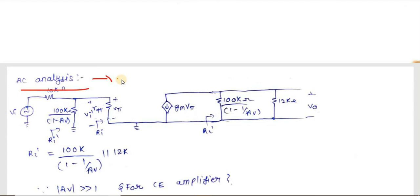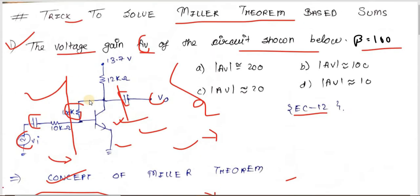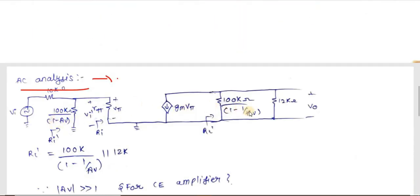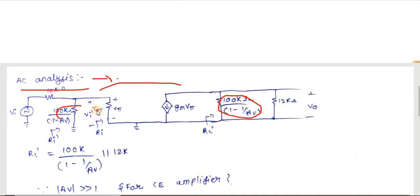For AC analysis, we use the re-model and short-circuit all capacitors. Applying Miller's theorem to the 100 kΩ feedback resistor, it splits into 100k/(1 − Av) on the input side and 100k/(1 − 1/Av) on the output side.